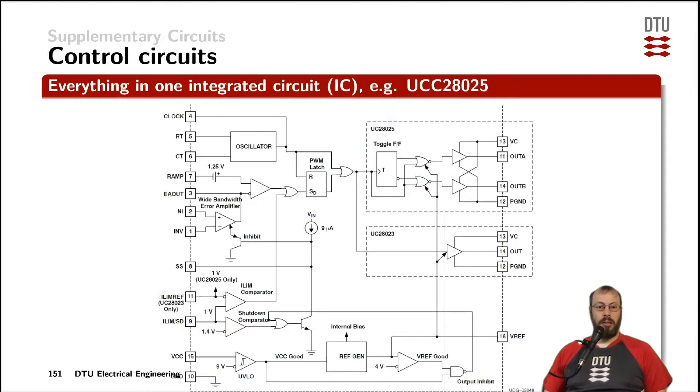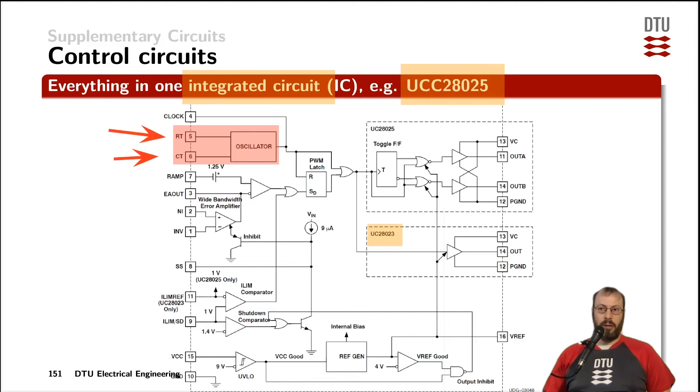Now there are plenty of integrated circuits on the market which contain most of those functionalities in one IC. This block diagram is from the datasheet of a so-called UCC28025, which is sharing its datasheet with another device which is called UCC28023. Up here we can see the oscillator part where you connect an external resistor and an external capacitor to the pins RT and CT.